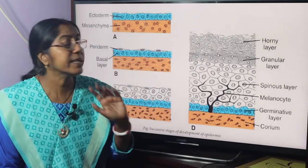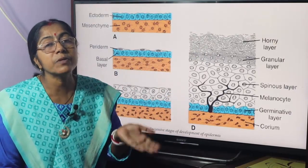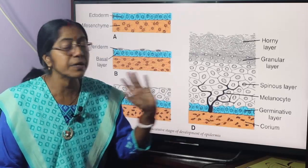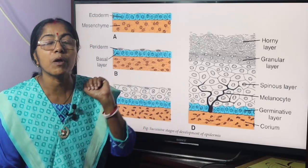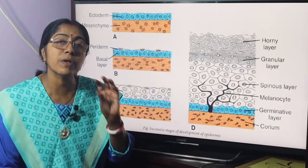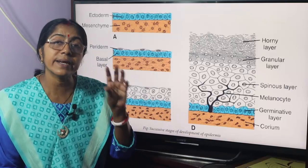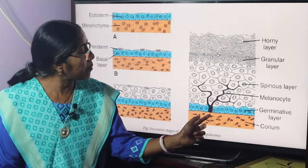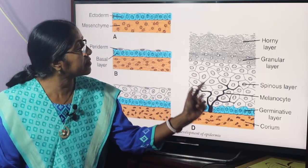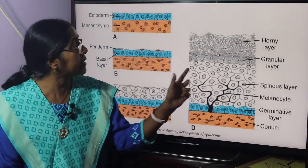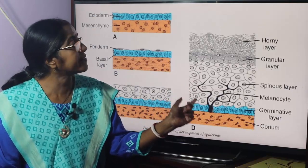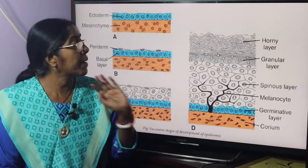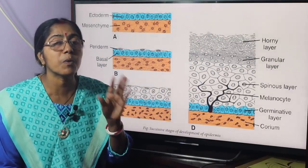In the case of thick skin, there is an additional layer between the granular layer and the horny layer, called the stratum lucidum. The spinous layer cells have processes called desmosomes. The granular layer cells are filled with keratohyalin material. This completes the formation of the epidermis, which develops from surface ectoderm.